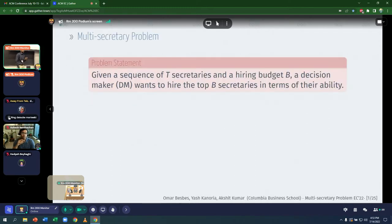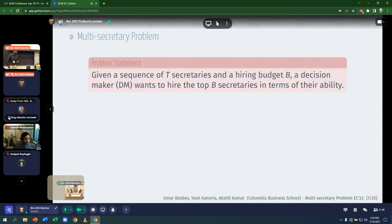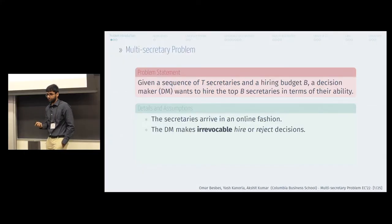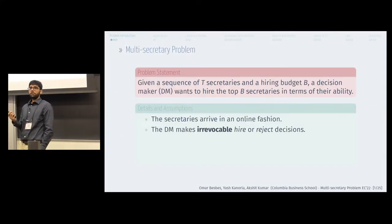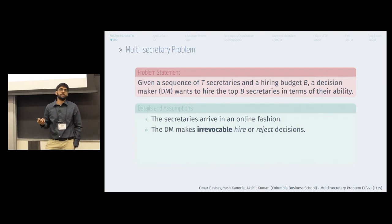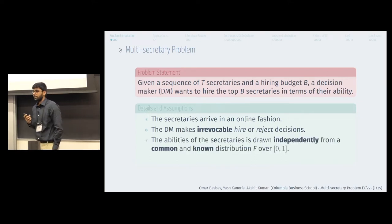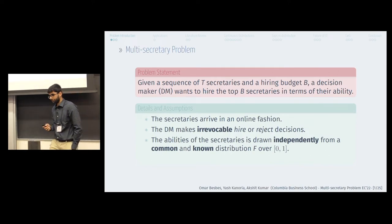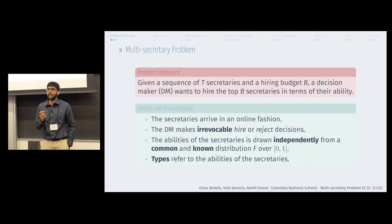The secretary problem is an online selection problem where you're going to interview a bunch of T secretaries, and as a recruiter, you want to select the top B candidates. The challenge arises from the fact that these secretaries arrive in an online fashion, and as a decision maker, you can only make irrevocable hire or reject decisions. In this talk, we assume that the abilities of the secretaries are drawn independently from a common and known distribution F, and types will refer to the abilities of these secretaries.